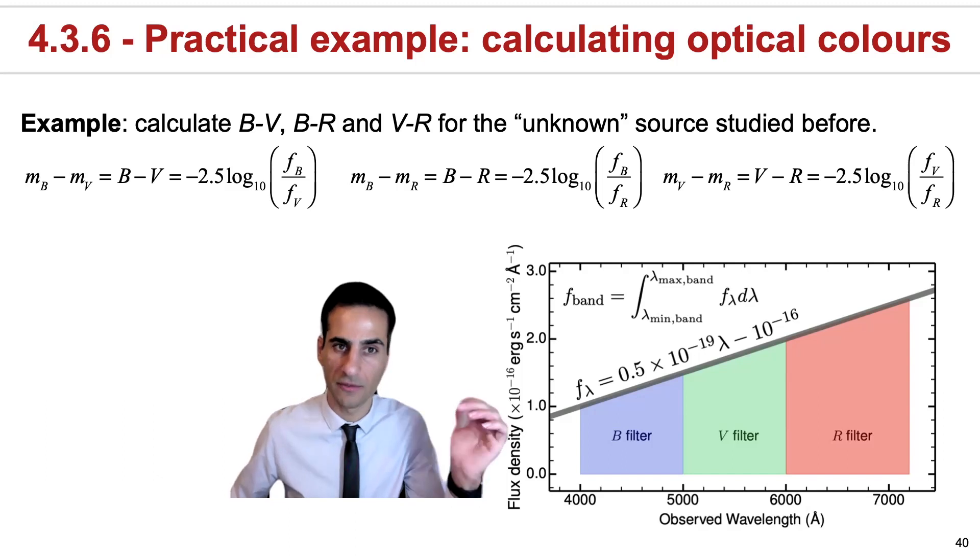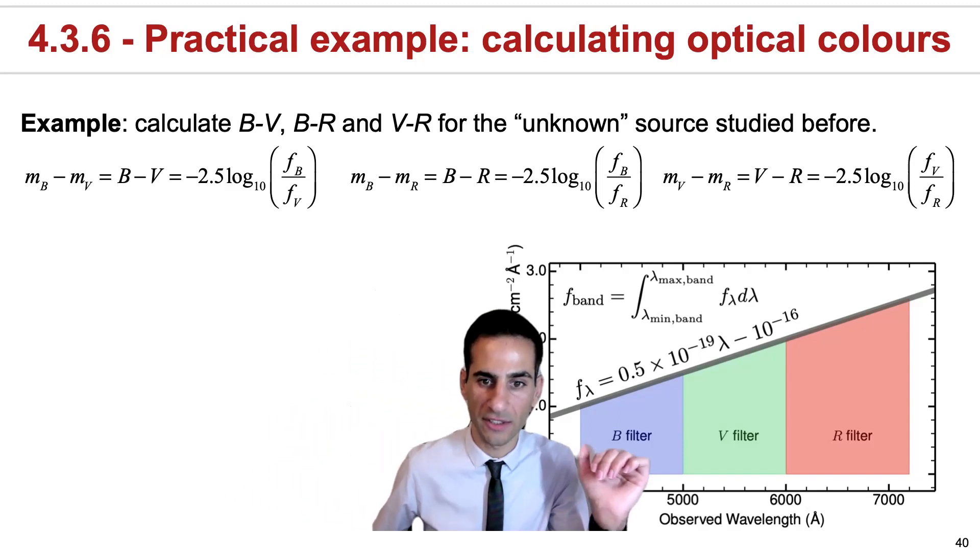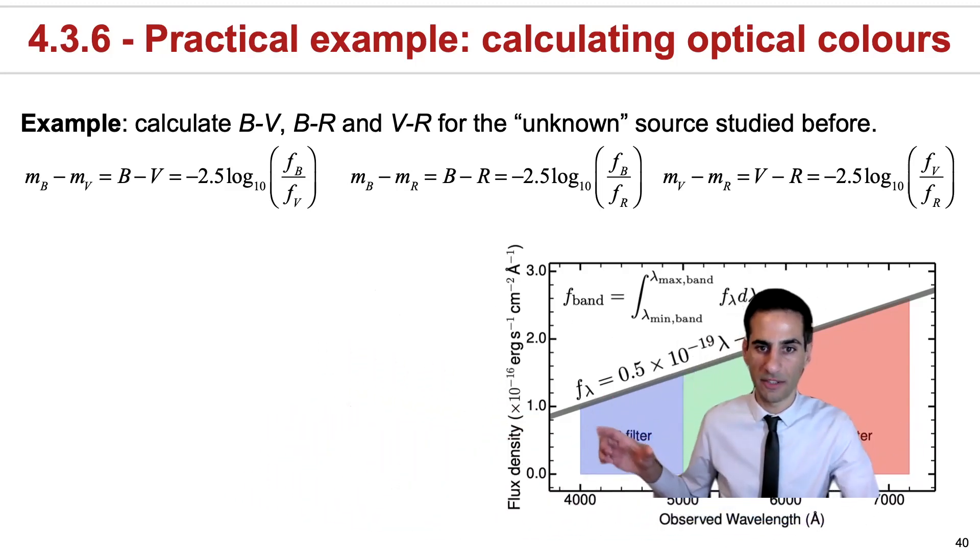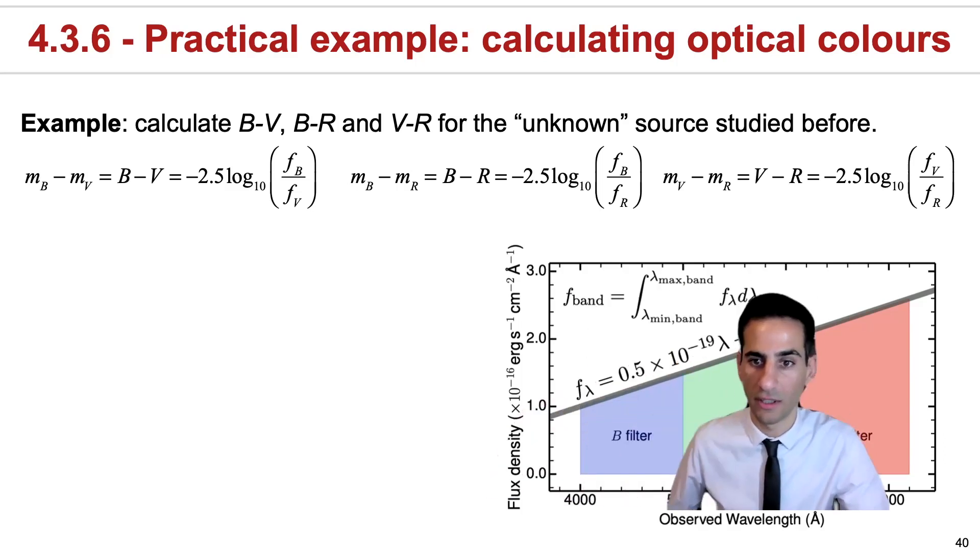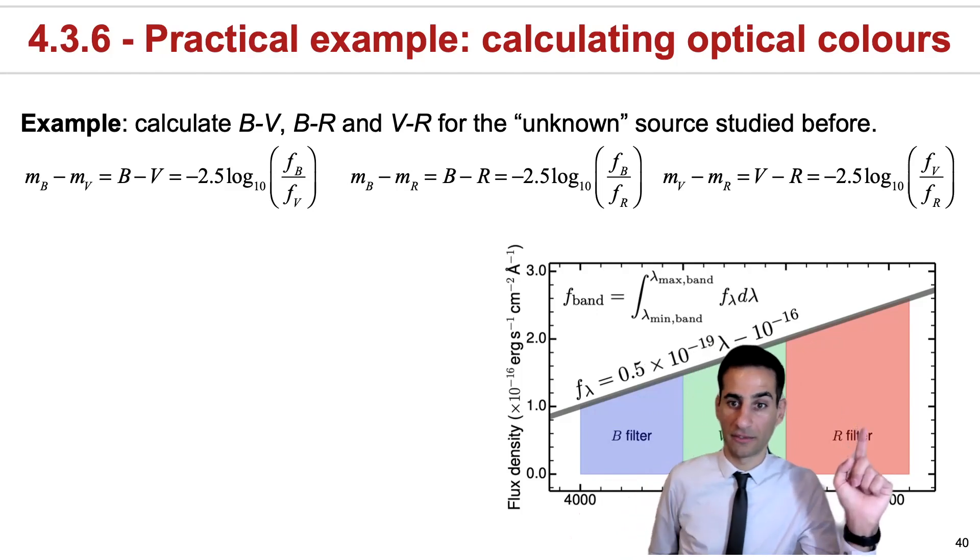We've seen how its flux density changes with wavelength before. For now, let's define these filters: the B filter, the V band filter that you can see here, and also the R band filter.